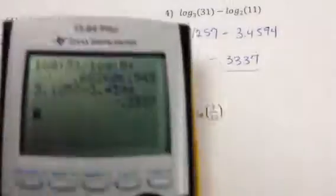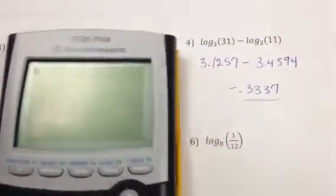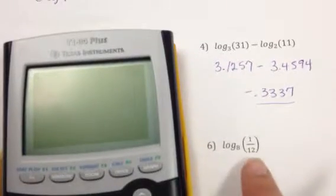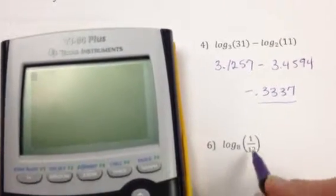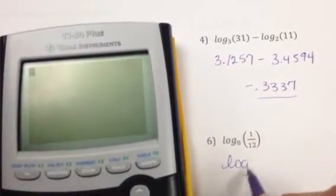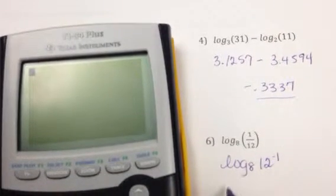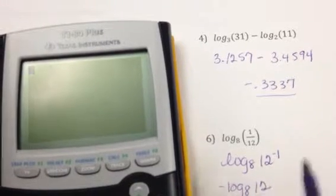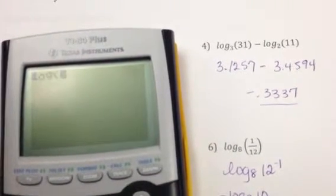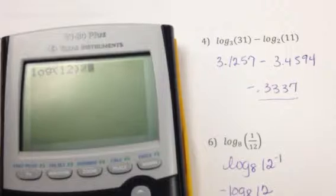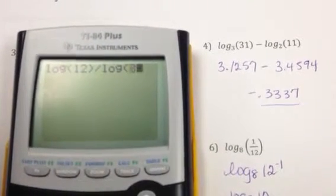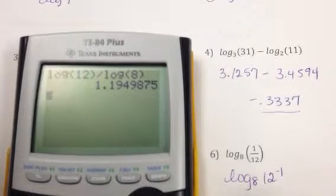Right. And then for the last one, we have the log of base 8 of 1/12. Remember, this right here can be rewritten as log base 8 of 12 to the negative 1. And then I can bring that out in front of my log to make it a little bit easier. So now I take the log of 12 divided by the log of 8 and multiply by negative 1.